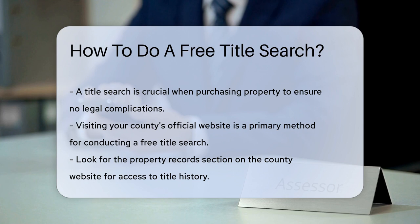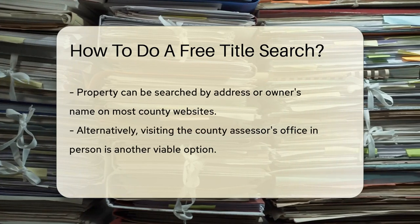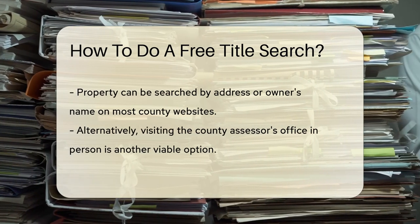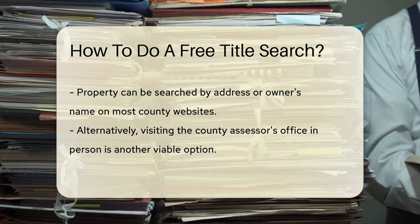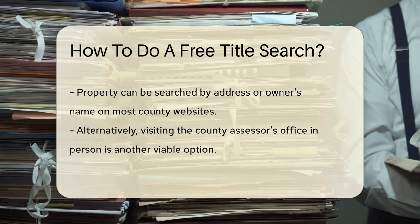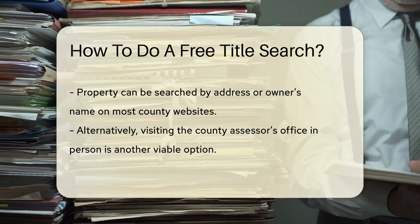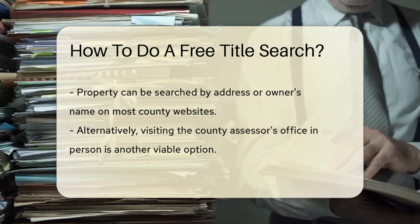One way is to visit your county's official website and look for the property records section. Many counties offer online access to property records, including the title history. You can search for the property by address or owner's name.